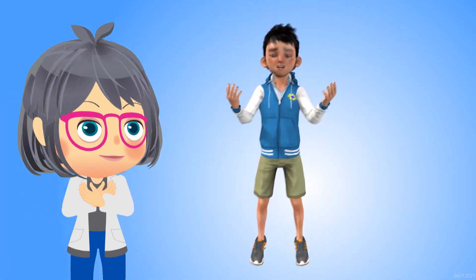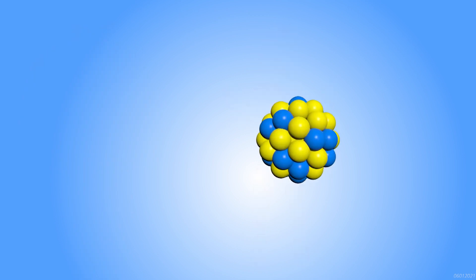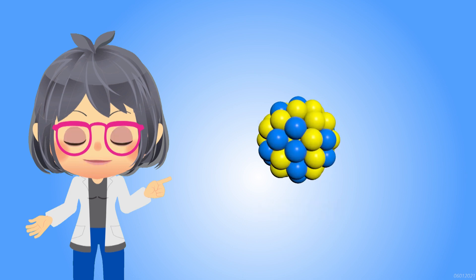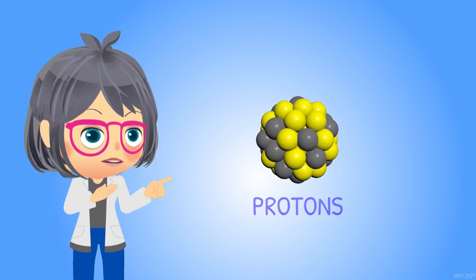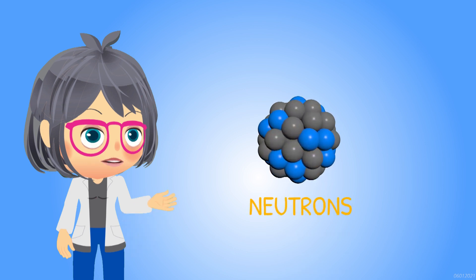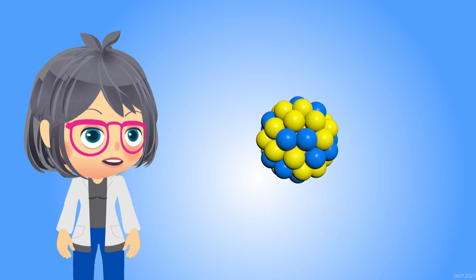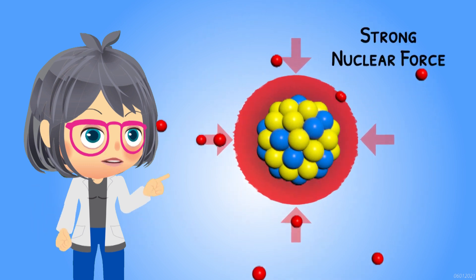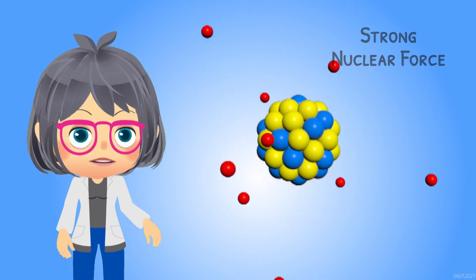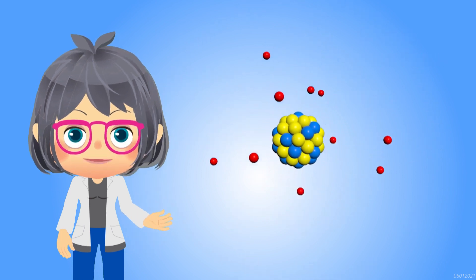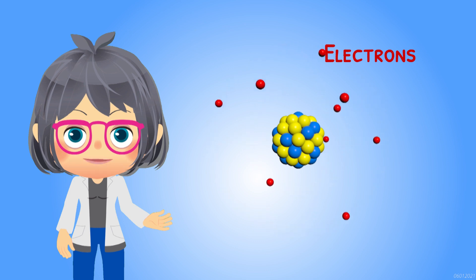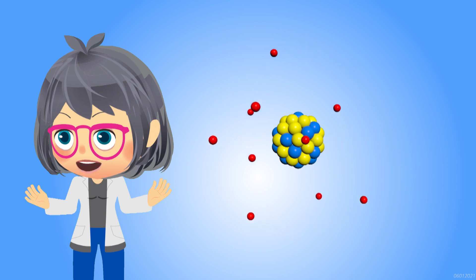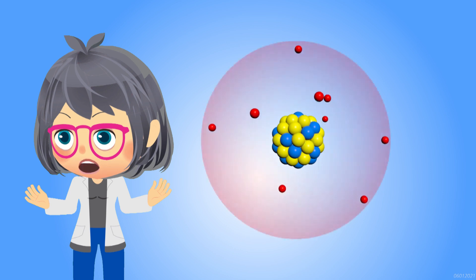That includes you and me! The atom itself has a nucleus, which may be made up of two types of particles: protons that carry positive charge and neutrons that have no charge. These particles are held together by a force known as the strong nuclear force to form the nucleus. Orbiting outside the nucleus are electrons that carry a negative charge. The attraction of the electron's negative charge to the nucleus's positive charge is what keeps the whole atom together.